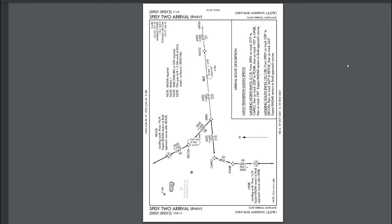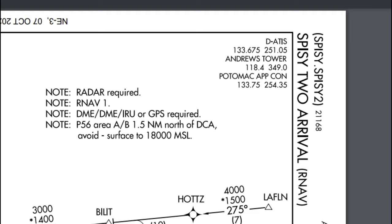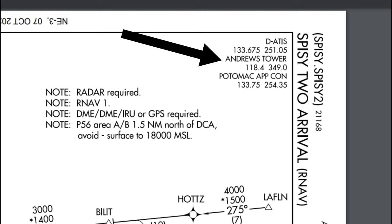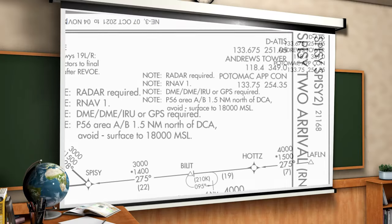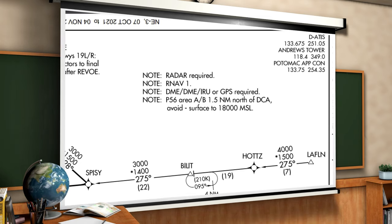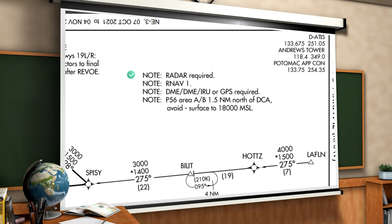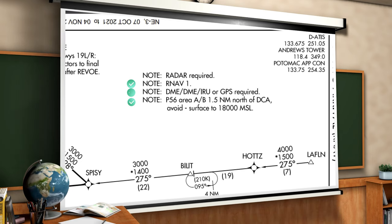Now that we've got those key bits of information out of the way, let's flip this thing on its side to get a better view. Over at the top right, this lists all of the frequencies we'll be using on this arrival. In the center, this lists all of the requirements to fly this procedure: you must have radar, RNAV, DME, and this is a P-56 area.